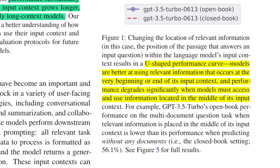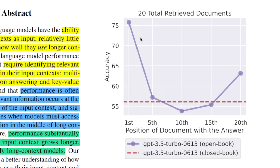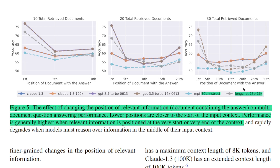They found that you basically get a U-shaped performance curve for these LLMs. For example, if the information is present at the beginning of the context, the accuracy of retrieval is high — around 75% for GPT-3.5 Turbo. Towards the end, accuracy is also good. However, if the information is in the middle, performance is pretty bad. This pattern remains consistent across different LLMs, not just GPT-3.5, but also Claude and open-source models like MPT-30B Instruct.